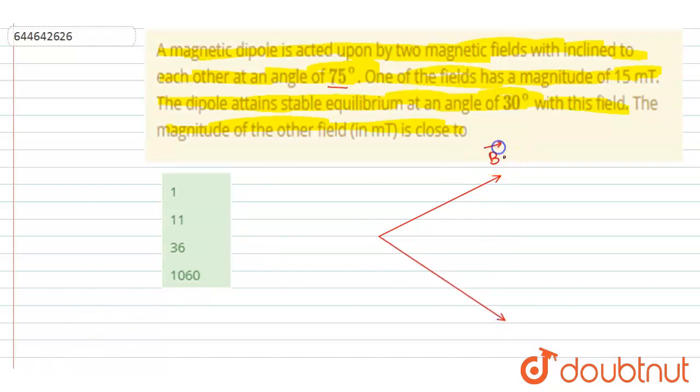This magnetic field is B1 vector and this is B2 vector. It is given that it attains stable equilibrium. The dipole maintains stable equilibrium at 30 degrees with this field. The magnitude of B1 is 15 milliTesla. At equilibrium it will be making an angle 30 degrees with it. If the total angle is 75 and this is 30 degrees, then this will be 45 degrees.